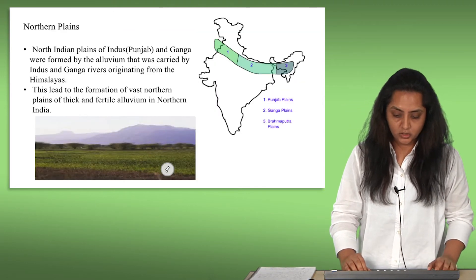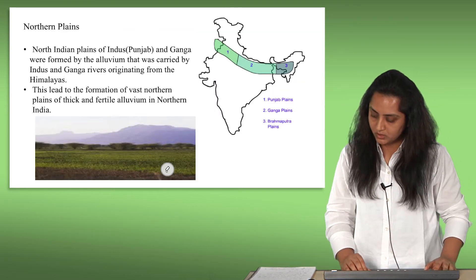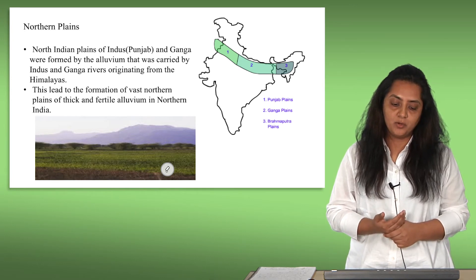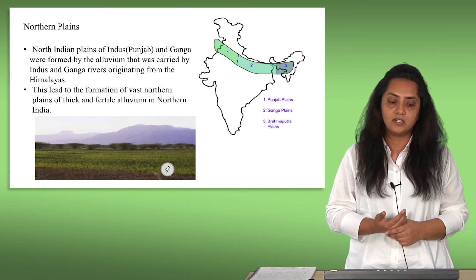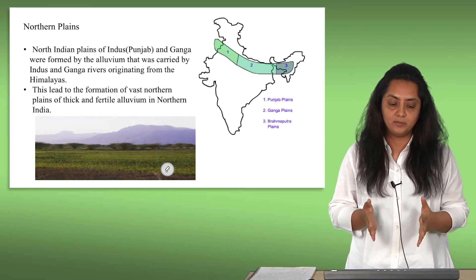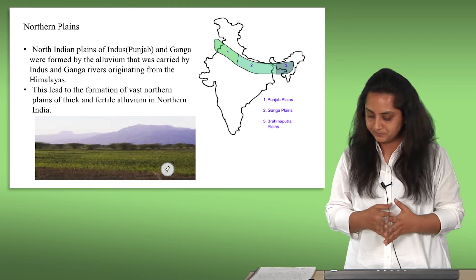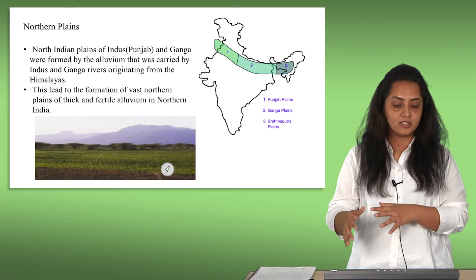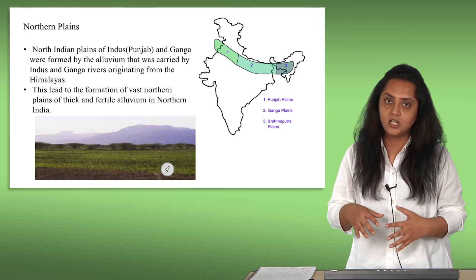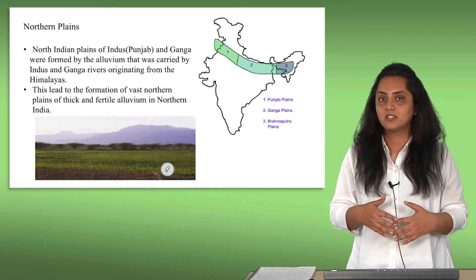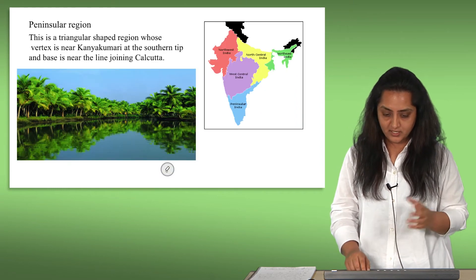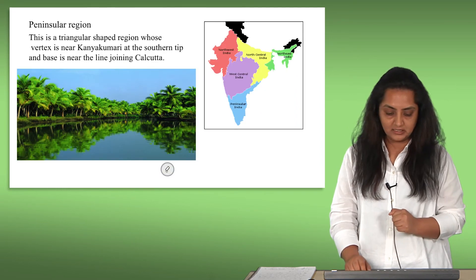Let us talk about the northern plains. Going further south are the northern plains, formed by alluvium carried by the Indus and Ganga rivers originating from the Himalayas. This led to the formation of vast northern plains of thick and fertile alluvium in northern India. There are three parts of the northern plains and their fertile regions. Because of the high fertility, agriculture is the biggest boom India could have as an industry for economic growth, and there is lots of greenery in India too.